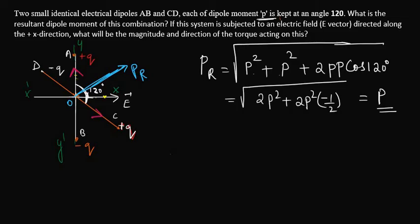Here we are supposed to calculate the magnitude and direction of the torque acting on the system, since there is an electric field which is acting in the x direction. I have already marked in this diagram. We can calculate the torque as torque equals P cross E, that is PE sin theta.